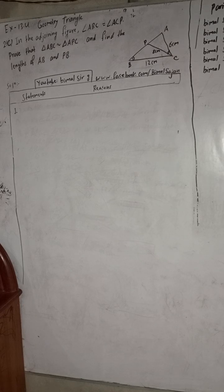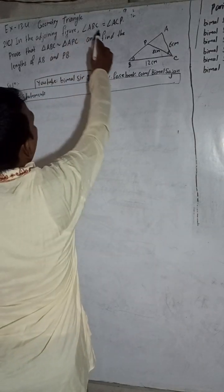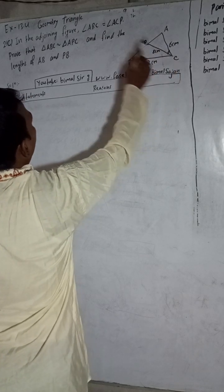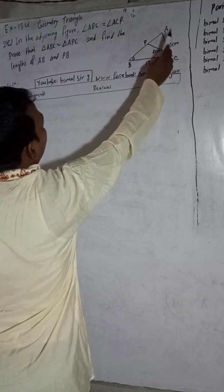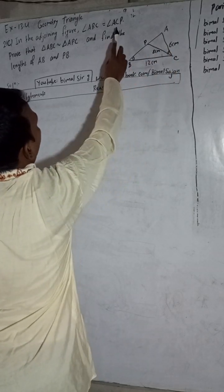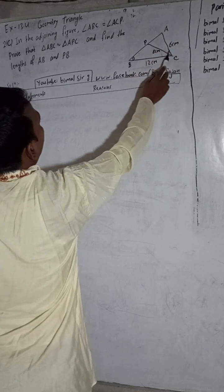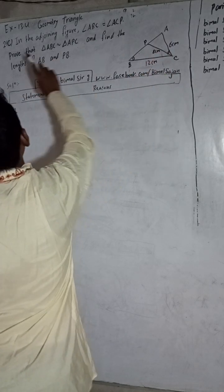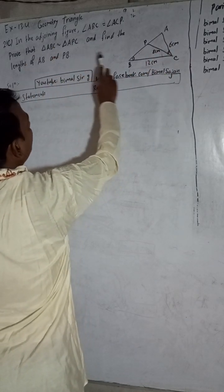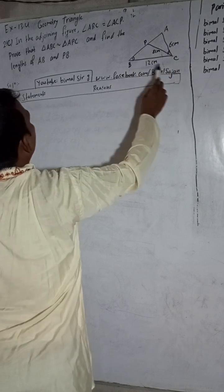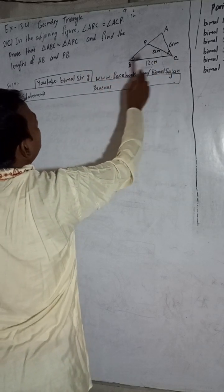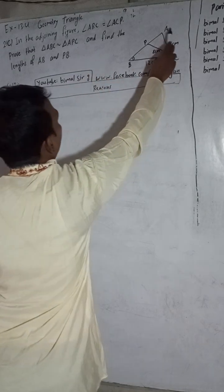So let me start this solution now. Question number 2C: in the adjoining figure, angle ABC — this is the figure — angle ABC. We have triangle ABC, this is the bigger triangle, which is similar to triangle APC.